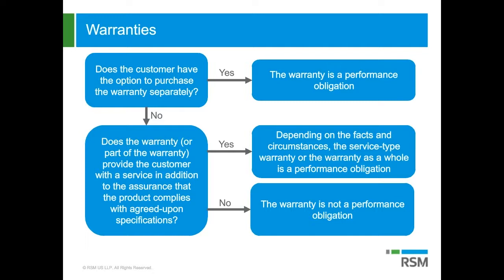If the warranty does provide the customer with service in addition to assurance that the product complies with specifications, then the warranty may be a separate performance obligation. If it doesn't provide that additional service, then it's not a performance obligation. If you do treat it as a performance obligation, you'll allocate some of the transaction price to it and likely recognize that amount over time, while the transaction price allocated to the related product is likely recognized at a point in time.